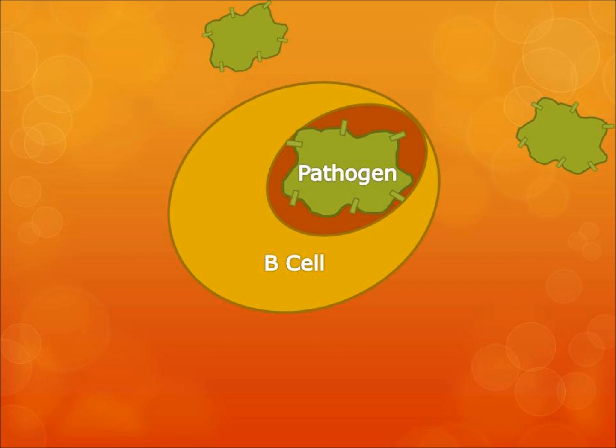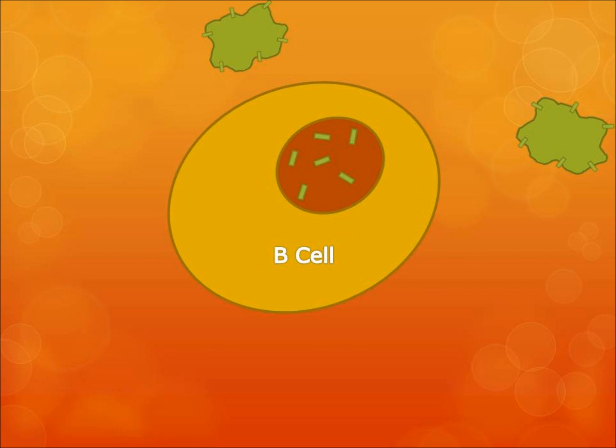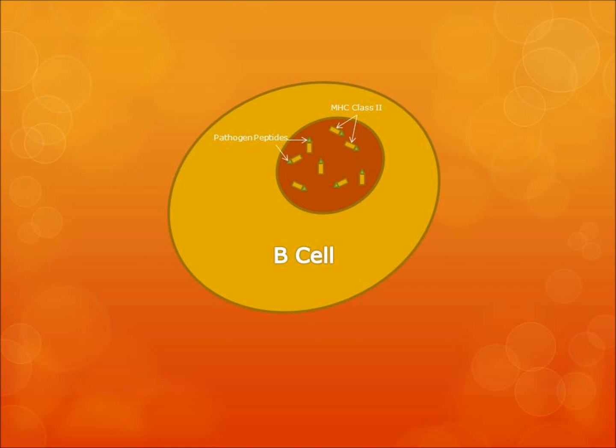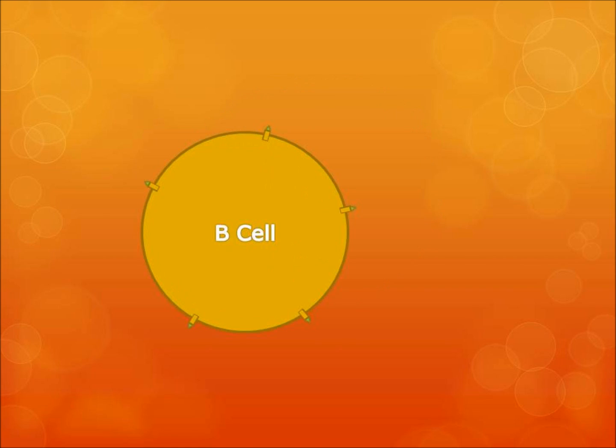The B cell then proceeds to chop up the pathogen into peptides, which bind with MHC class II molecules. This complex of antigen and MHC class II is then put onto the surface of the cell.